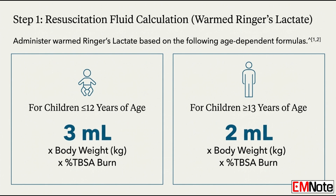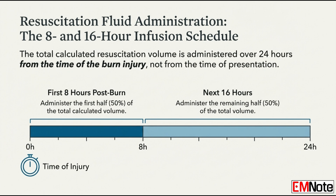So that's our first big numeric split based on age: 3 milliliters versus 2. Now, once you've calculated that total 24-hour volume, how do you schedule the administration? The total calculated volume is split into two mandatory phases. Half of that total volume is given in the first eight hours after the burn happened. The remaining half is then administered over the next 16 hours — a much slower rate. The focus is on rapid initial volume replacement to get tissue perfusion back, followed by a sustained, more moderate rate to maintain stability.